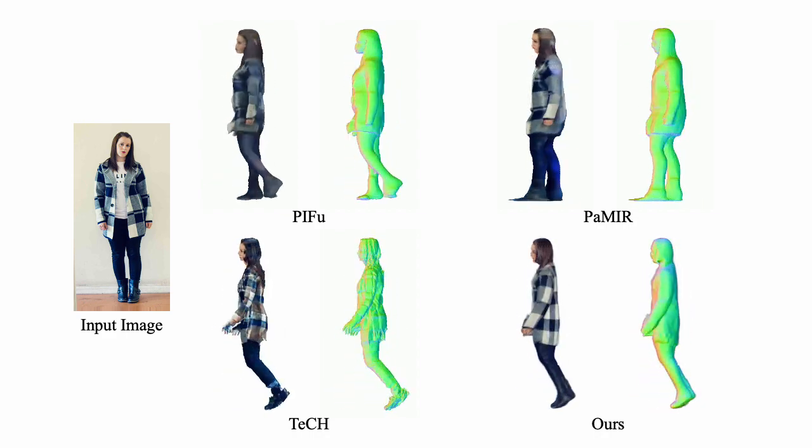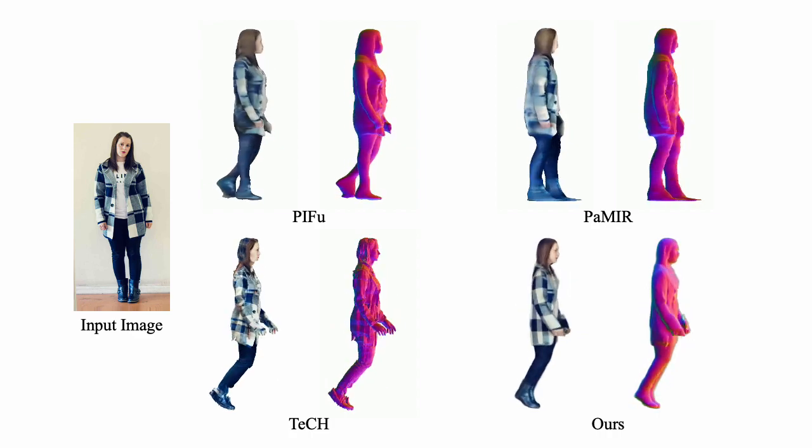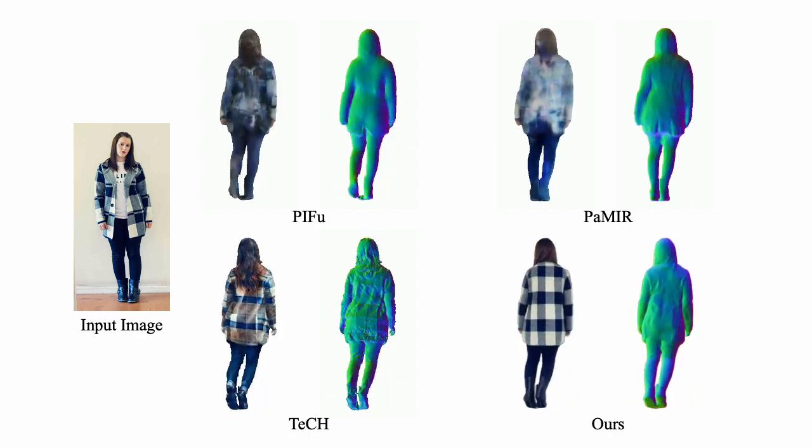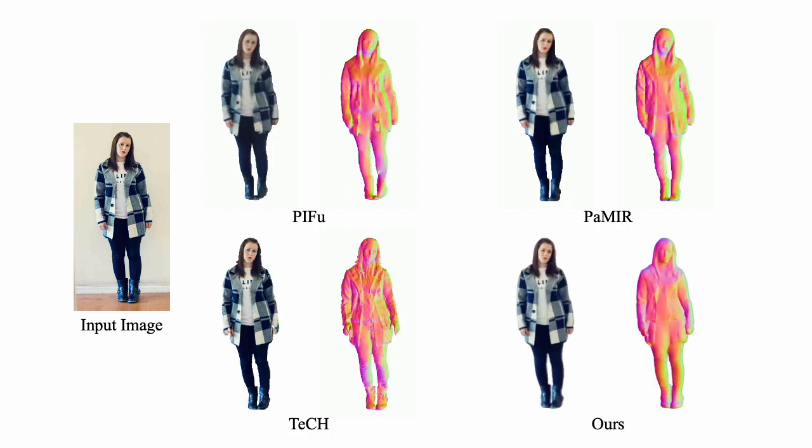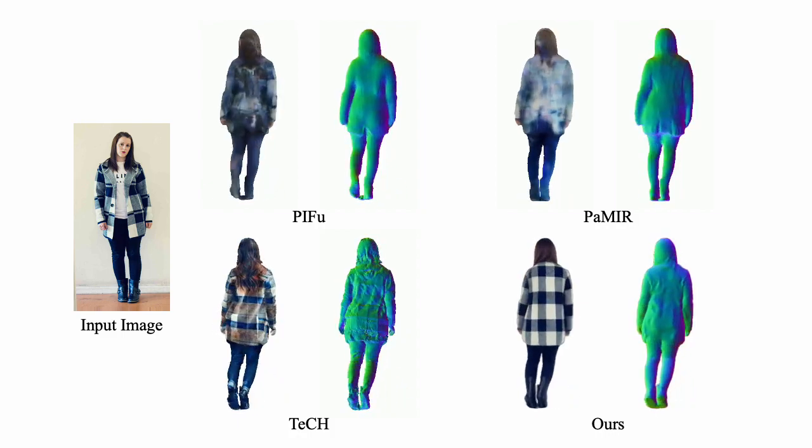Moreover, in the woman example, our method successfully generates realistic view-consistent texture and geometry for humans with complex clothing textures that TeCH fails to infer.